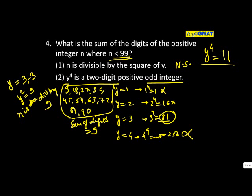Wrong approach totally. y to the power 4 can be 11, y to the power 4 could be 25, y to the power 4 could be 49, y to the power 4 could be 81. Who stops me now?